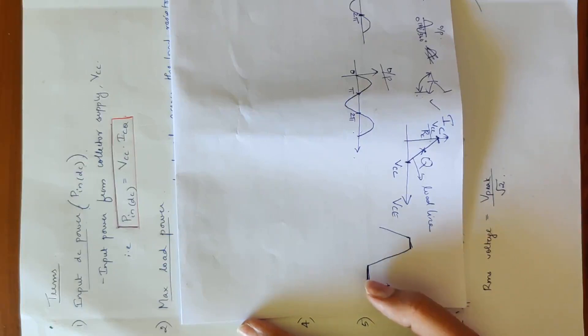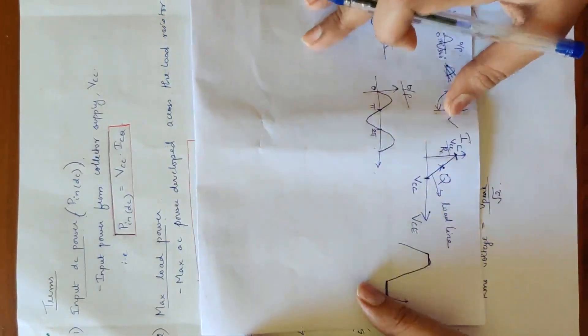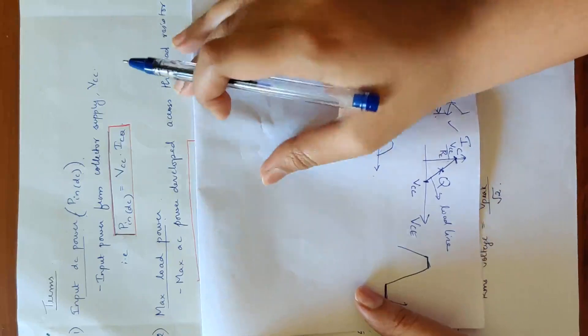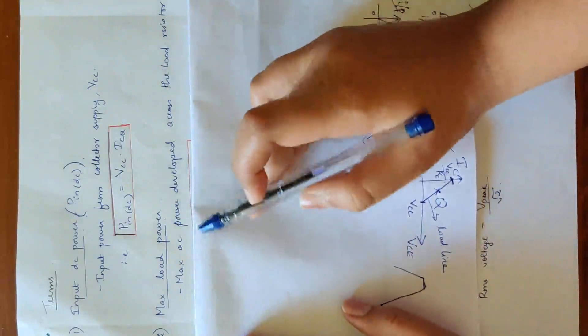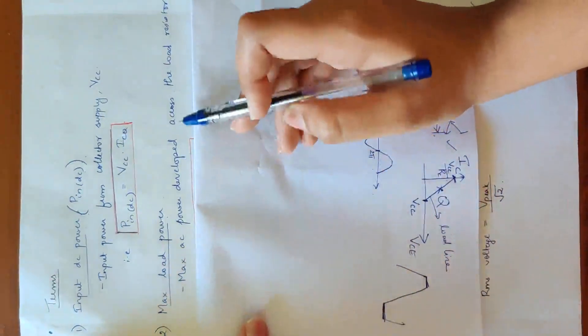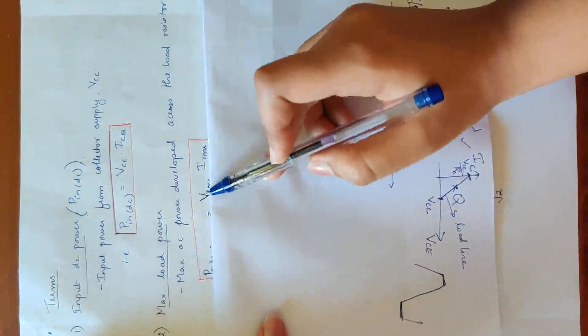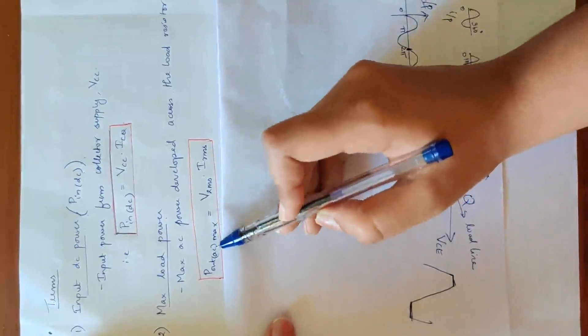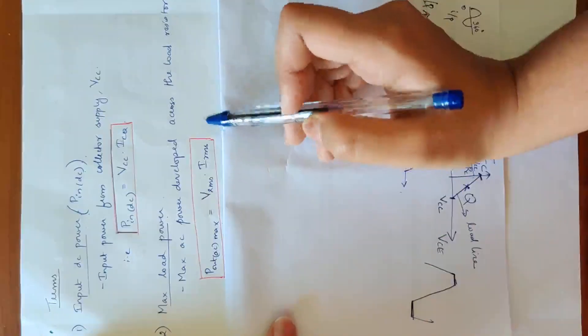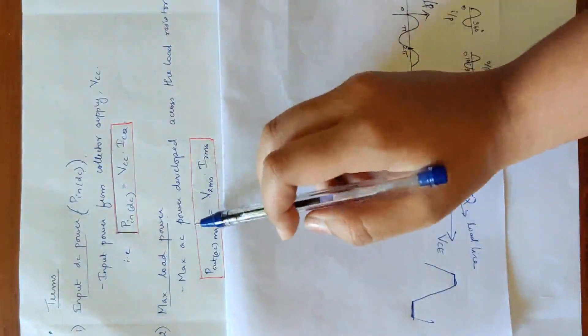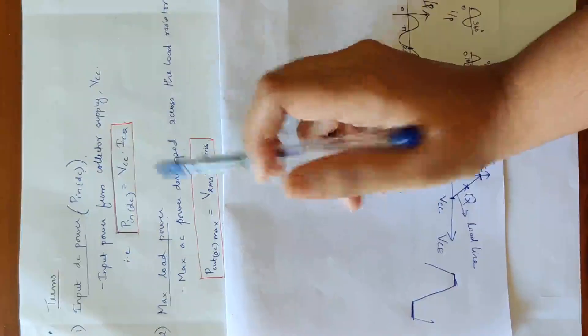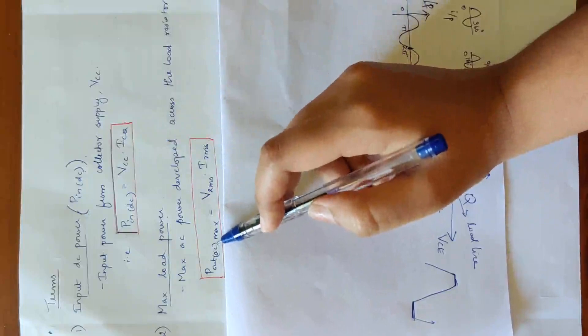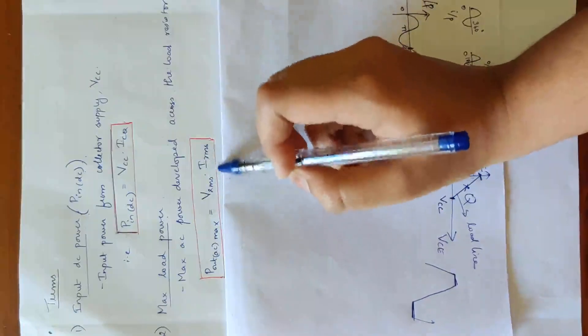Maximum load power — what is the power equation? Voltage into current. We look at the output AC power, specifically the maximum AC power developed across the load resistor. P_OUT_AC maximum equals VRMS into IRMS, using AC voltage and AC current.